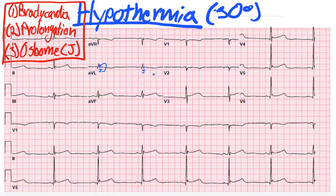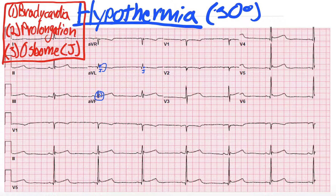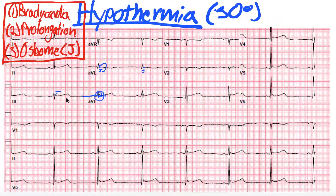The J point in different conditions can be elevated, but hypothermia tends to be the condition we talk most about. So what is a J point elevation, a J wave, or an Osborne wave? If we go down to lead three and AVF, we can see this elevation right here — I'll put a square around the actual elevation. That is the J point popping up. The J point elevation is above the isoelectric line, and we see this J point peeking out above the isoelectric line.